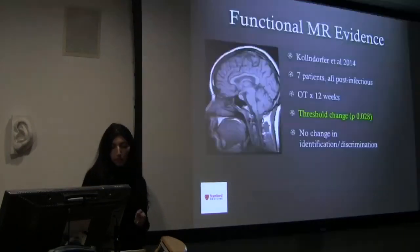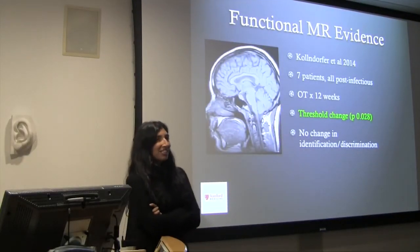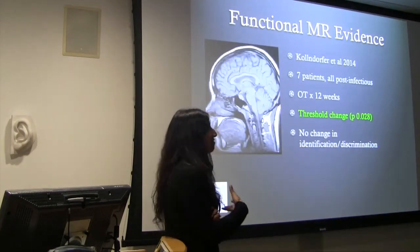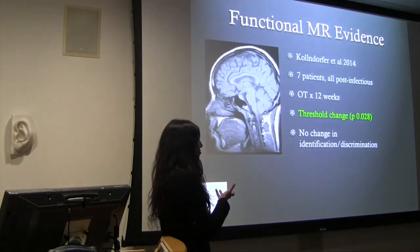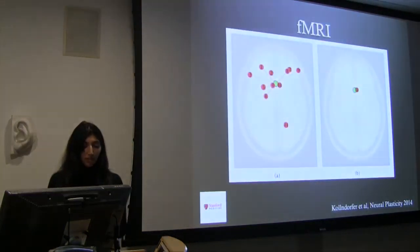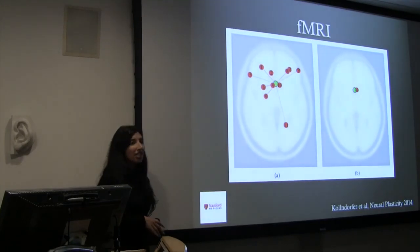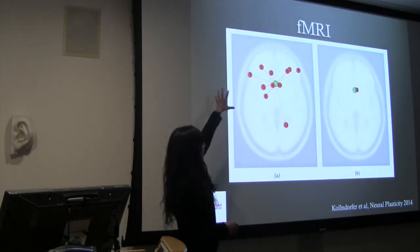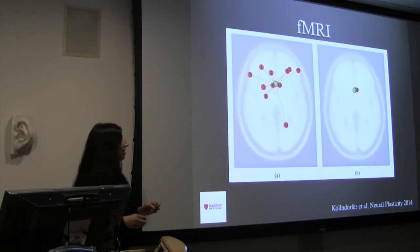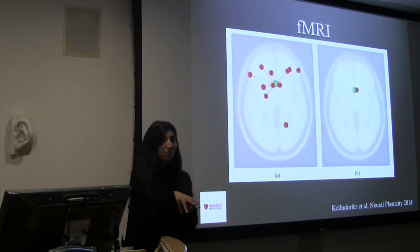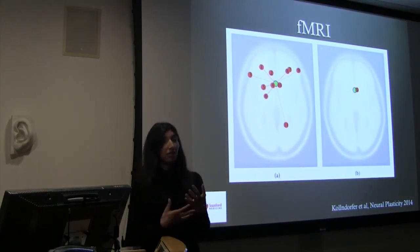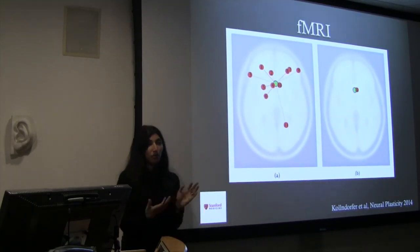The really exciting part about olfactory training to me is this study — which uses only seven patients but is a functional MRI study. Patients went through olfactory training for 12 weeks. Before training, they had a disparate, chaotic array of connections throughout their cortex. After 12 weeks of training, all of those synapses were back where they were supposed to be in the entorhinal/piriform cortex. I think it does show that we are doing something real to the brain — we're actually changing the pathways in the brain by doing olfactory training.